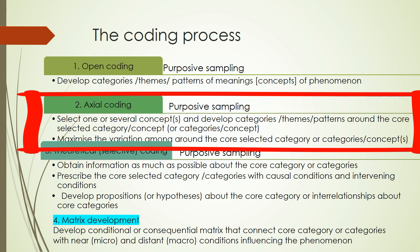In axial coding, we again conduct purposive sampling — purposefully identifying observations to get more details about the concepts or categories. The purpose here is to maximize the variation of the selected category or categories of the concepts.